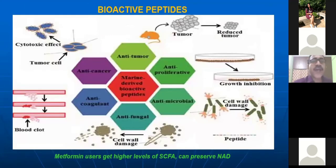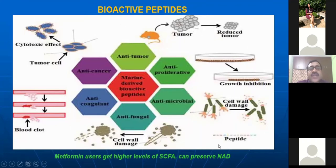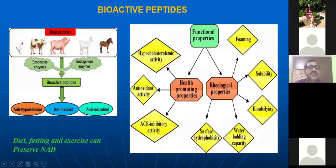Regarding bioactive peptides, these are mostly prepared from meat or marine origin. These bioactive components have many health benefits, including anti-hypertension, anti-cancer, anti-coagulant, and anti-tumor properties. Some of you may be aware of the ACE inhibitor proteins, carnosine, anserine, and similar peptides from meat, which are helpful for health — anti-hypertension, antioxidant, and antimicrobial.